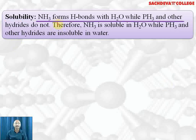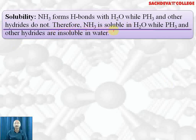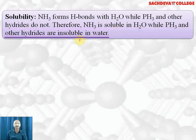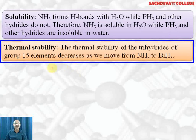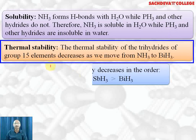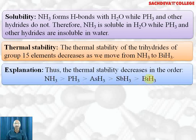Solubility: ammonia is extremely soluble in water because it can form hydrogen bonds with water, while phosphine and other hydrides do not. Ammonia dissolves in water forming ammonium hydroxide; phosphine and other hydrides are insoluble in water because they cannot form hydrogen bonds with water, and even protonation of phosphine with water is difficult. Thermal stability of trihydrides of group 15 decreases down the group from ammonia to bismuthine, because bond dissociation energy decreases due to increase in bond length.